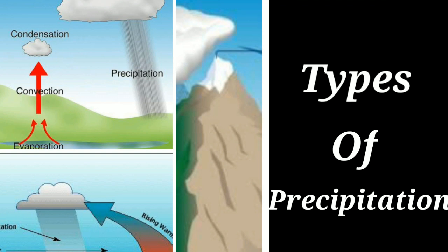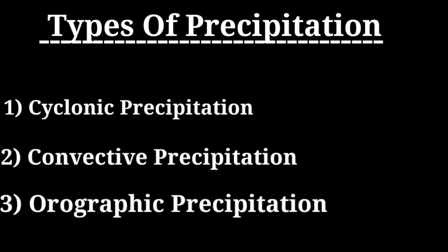I will give you a link in the description box below — if you want, you can check it out. Now we discuss about types of precipitation. There are three types of precipitation: first is cyclonic, second is convection, third is orographic.